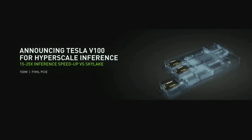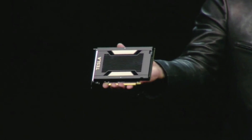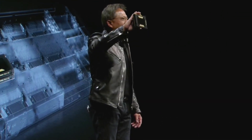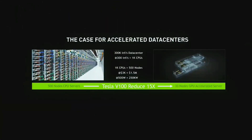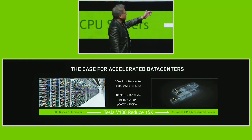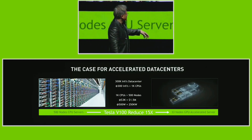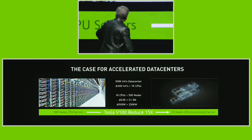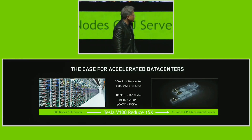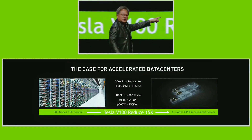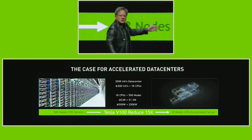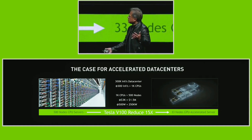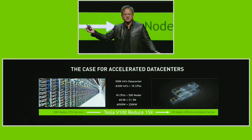Ladies and gentlemen, this is Tesla for hyperscale scale-out — the PCI Express FHHL, full height half length. 500 nodes is basically an entire row of servers, translating to roughly one and a half million dollars, consuming 500 watts each — 250 kilowatts total. Using a conservative 15x reduction with Tesla, that translates to just 33 nodes instead of 500. So instead of a full row, you can replace it with 33 nodes — or increase the throughput of your data center by 15 times without building more data centers, as AI workloads flood into hyperscale data centers.